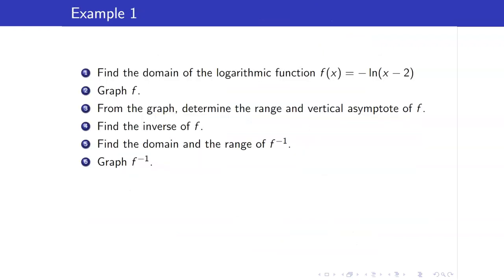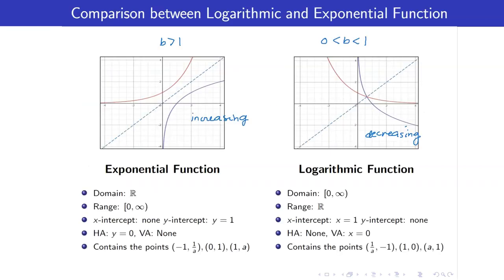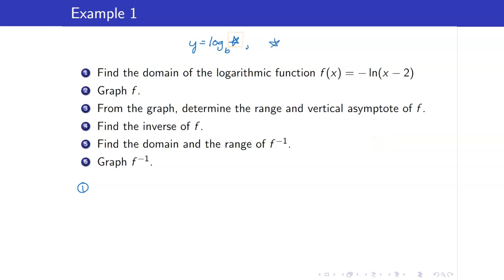Let us consider this example. Let us find the domain of f(x) equals negative ln of (x minus 2), graph it, determine the range and vertical asymptote, find the inverse, and find the domain and range of f inverse. For the domain, the expression inside the logarithm must be strictly greater than 0. In this case, our expression is x minus 2, so we have x minus 2 greater than 0, which gives us the domain x greater than 2.